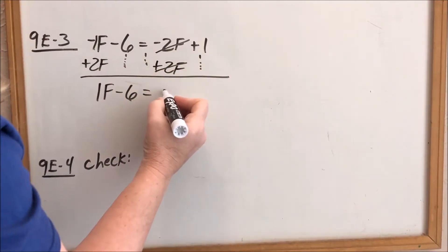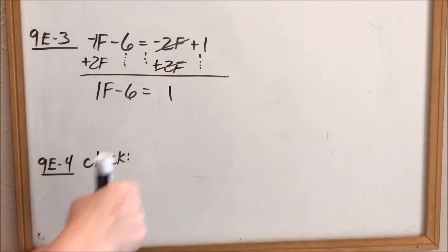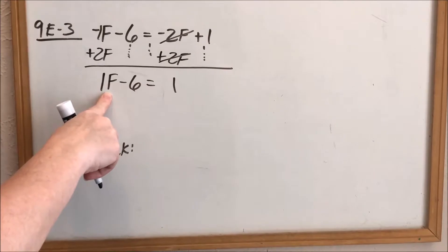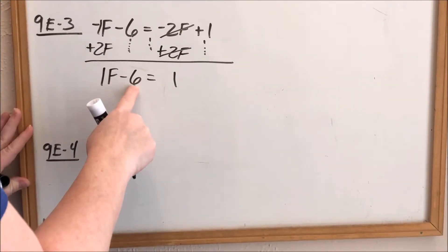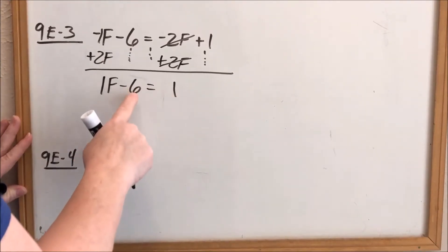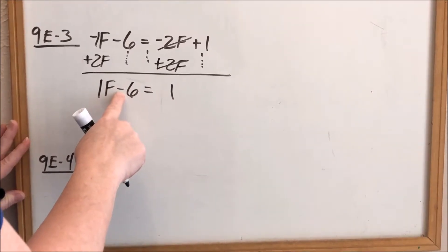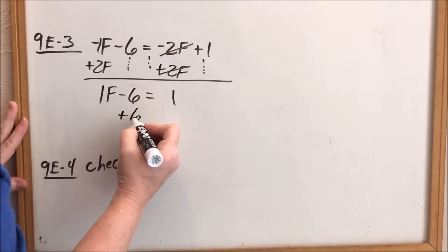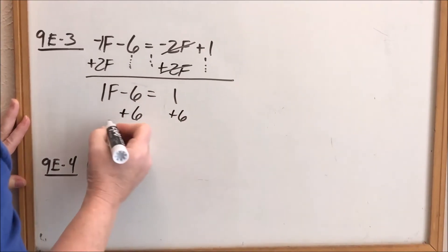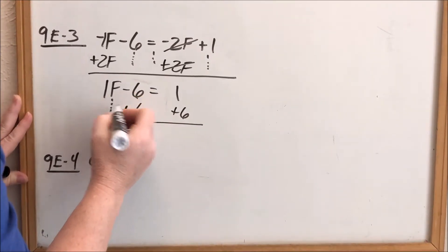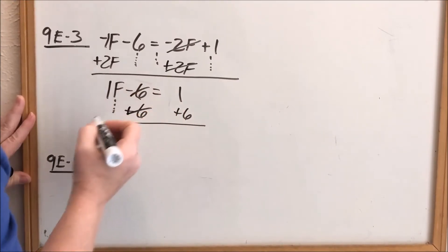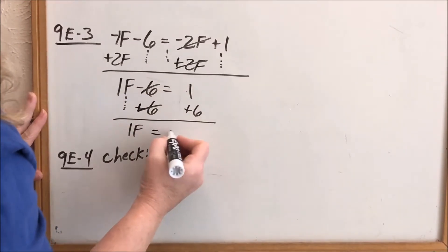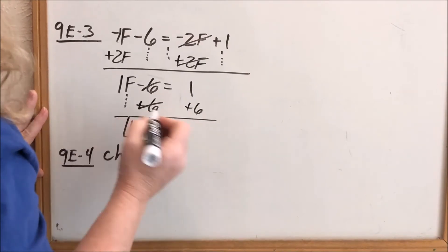I keep the remaining terms in the equation. On the right side: a negative 2F and a positive 2F cancel to zero, and I still have positive one. I'm not done — I'm still trying to get letters by themselves. I need numbers on the right-hand side, so I want that negative 6 to go away. The opposite of subtracting is adding 6. Whatever I do to one side I do to the other. My 1F stays; negative 6 and positive 6 cancel. Then positive 6 plus positive 1 equals 7. So F equals 7.